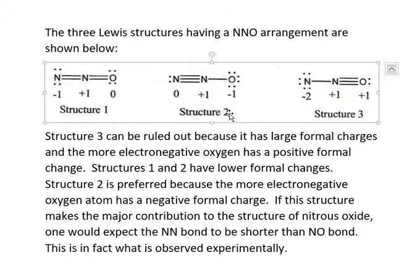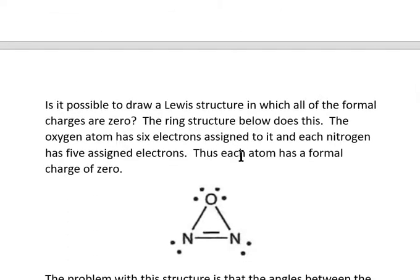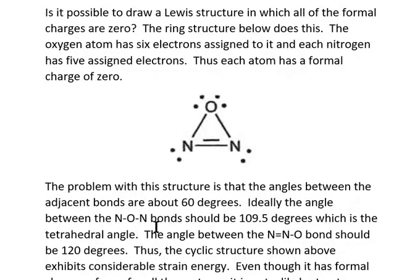Now let's look at the cyclic structure. For the oxygen, six electrons are assigned, and it has six valence electrons — so formal charge is zero. For each nitrogen, five electrons are assigned and five valence electrons, so formal charge is zero. They all have zero formal charges, which is good. However, the problem is that this structure has a lot of strain — the bond angles of an equilateral triangle would be 60 degrees. Ideally, the N–O–N bond angle should be 109.5 degrees (tetrahedral) and the N–N–O angle should be 120 degrees, so the cyclic structure has considerable strain.